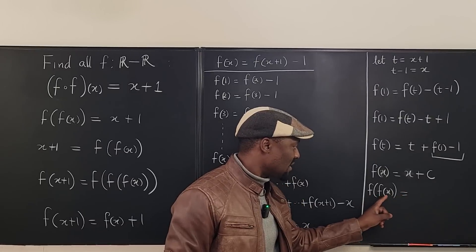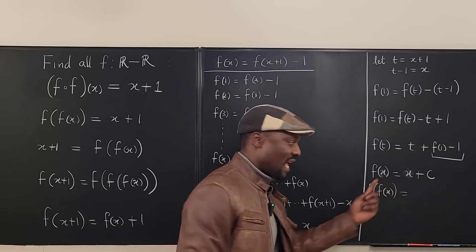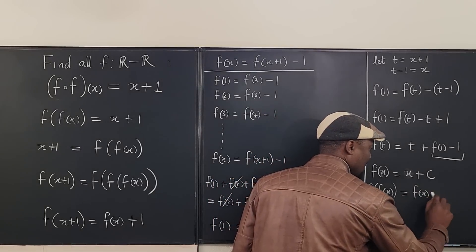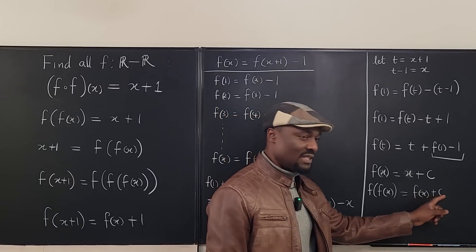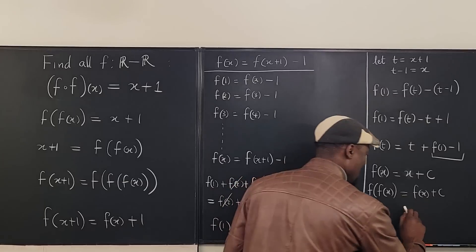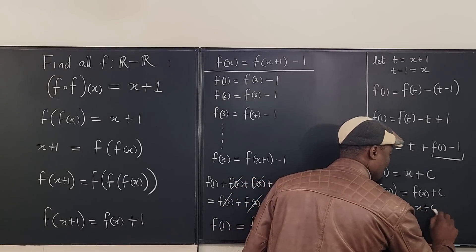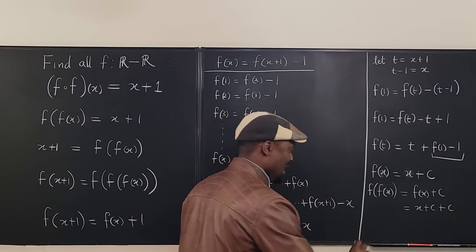But when you compose this with itself, it means you're making this to replace x. So it's going to be f of x plus c. But f of x plus c is x plus c plus c. So this is equal to x plus c plus c. What is x plus c plus c? x plus two c.